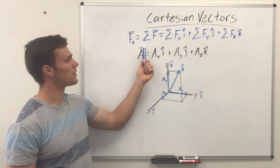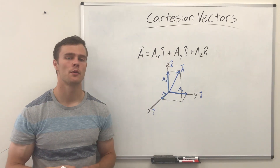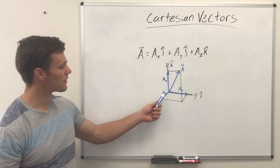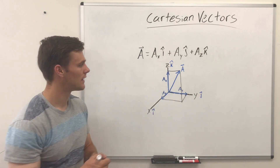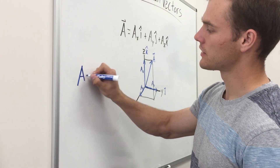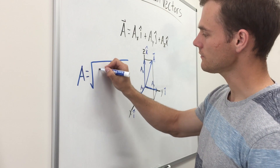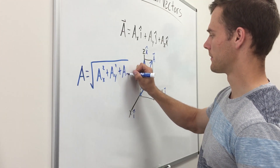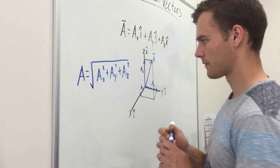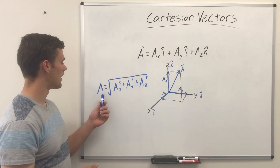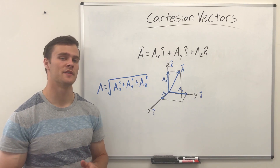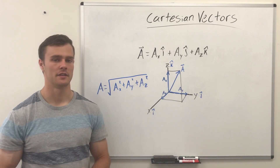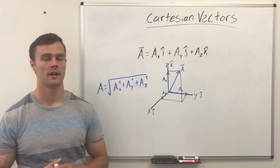To find the magnitude of vector A, we add up the square root of the sum of the squares — that is, the magnitude of A equals the square root of A sub x squared plus A sub y squared plus A sub z squared. That's the square root of the sum of the squares — important to remember. If you're just working in 2D space, you can drop the A sub z component, and it'll just be A sub x and A sub y, which ends up looking a lot like the Pythagorean theorem.